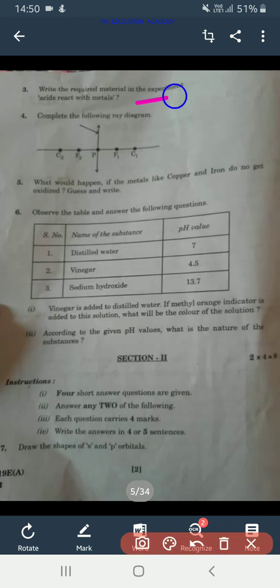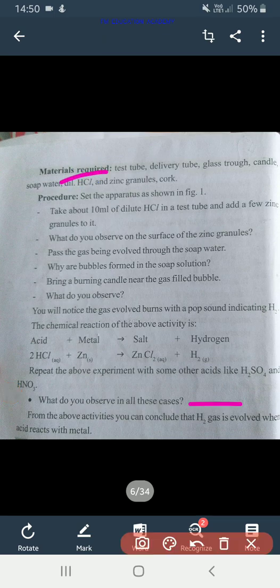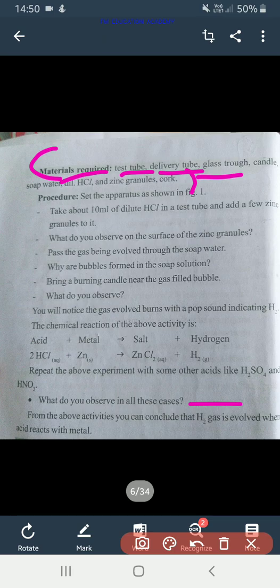Third question, write the required materials in the experiment acids react with metals. I had told you to prepare all the experiments of acids and bases and I provided the PDF also. The materials required are test tube, delivery tube, glass trough, candles, soap water, dilute hydrochloric acid and zinc granules and cork.